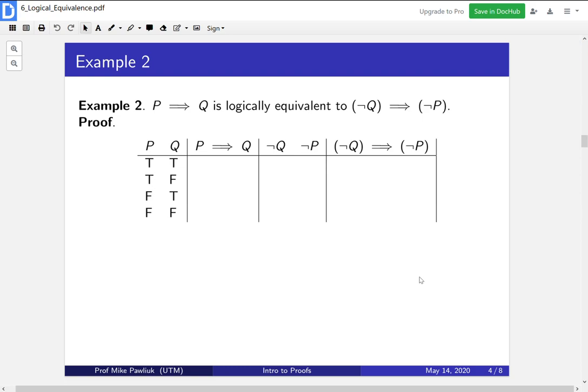Let's look at a more sophisticated example. P implies Q is logically equivalent to NOT Q implies NOT P. To do this, we will compute all possible outputs of P implies Q, and we'll compute all possible outputs of NOT Q implies NOT P, and then we'll compare their outputs.